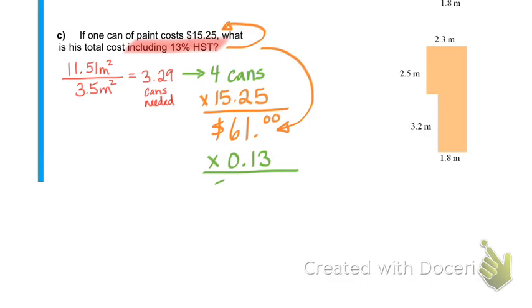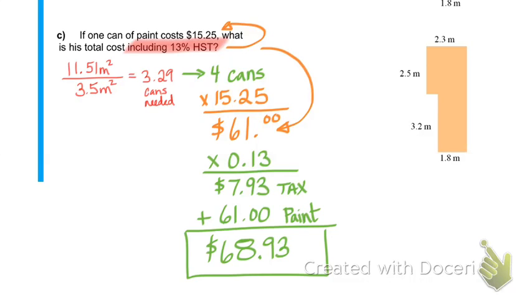Our total comes out to $7.93 but keep in mind that is only the tax and we do need to add that on to our $61 in paint. So we're looking at a total cost of $68.93.